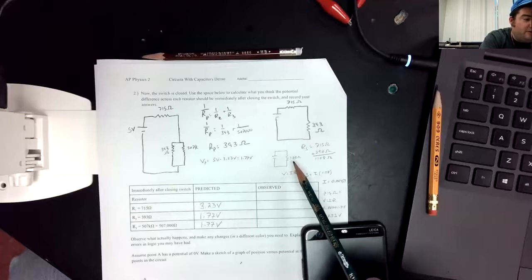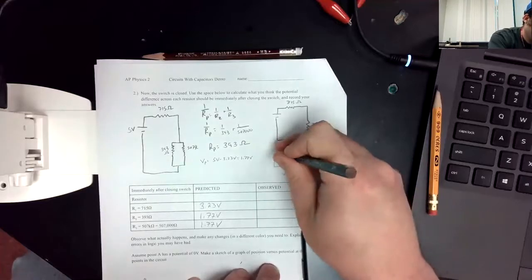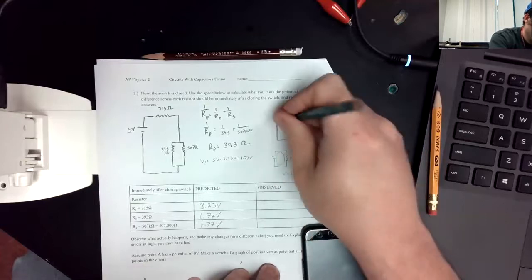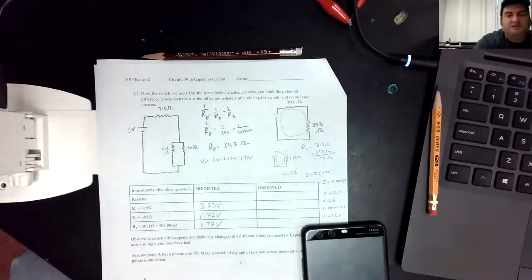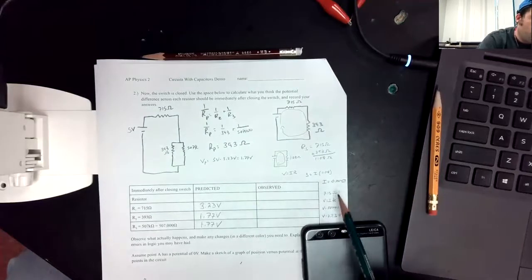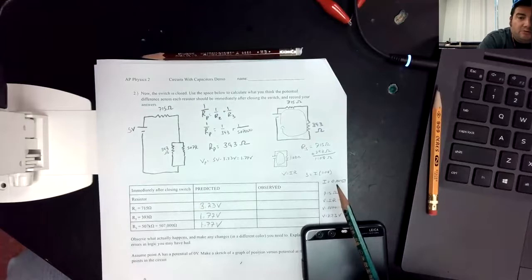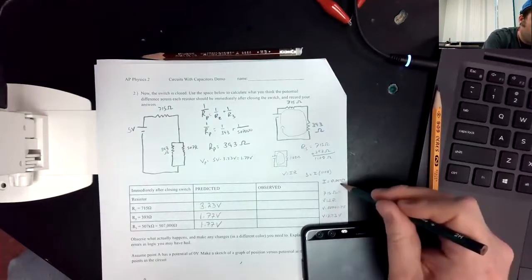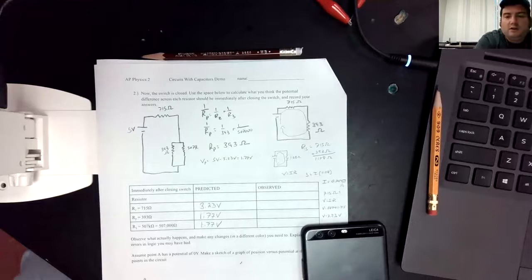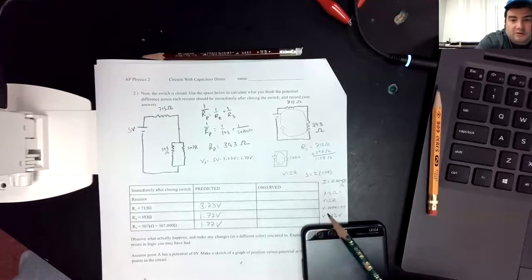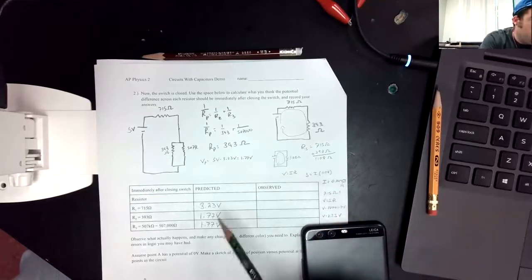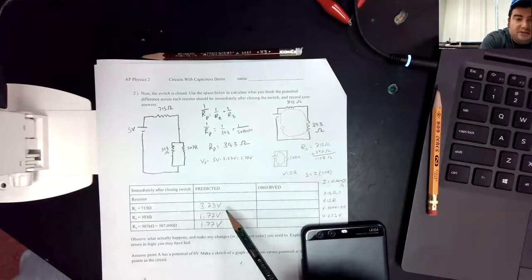So now I know the total current through the circuit, which in reality passes through the 715-ohm resistor. So for the 715-ohm resistor, I could just do Ohm's Law to find it, and I come up with 0.00451 amps. So for the 715-ohm resistor, I just do V equals IR for that one resistor, and I get 3.23 volts predicted for that.